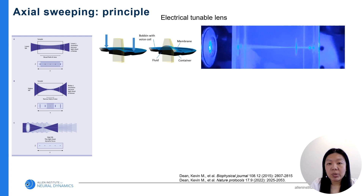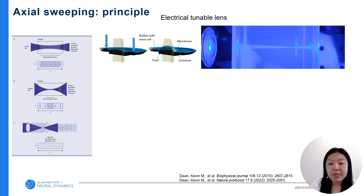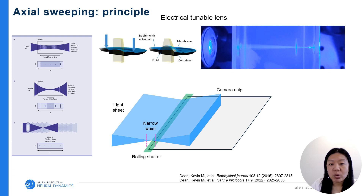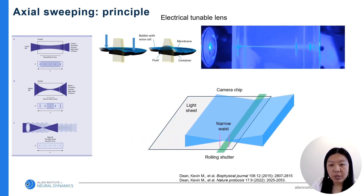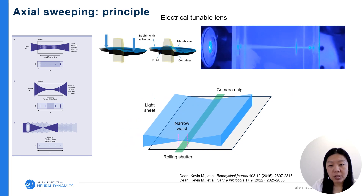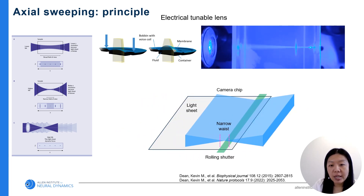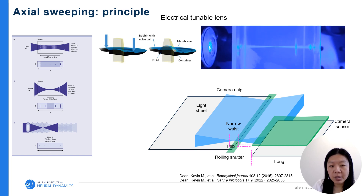As we see from the light sheet principle illustration, to achieve high Z resolution the NA of the illumination beam is higher, which means only a small zone of the sheet is actually in the focus zone. To achieve higher resolution through the entire field of view, Kevin Dean and colleagues introduced the idea of axial sweeping. An electrically tunable lens (ETL) is one way to shift the focus of the sheet. A camera with a rolling shutter allows only a certain number of line pixels to be active at one moment, and synchronizing the ETL with the rolling shutter creates an artificially thin sheet on the imaging sensor.